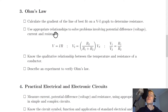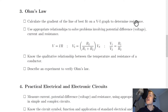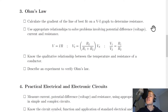Moving on to section three, Ohm's Law. You need to calculate the gradient of the line of best fit on a V-I (voltage-current) graph to determine resistance. For an ohmic conductor this should be a straight line through the origin, and the gradient gives you the resistance. You calculate the gradient by doing the change in Y over the change in X, or (Y2 − Y1) divided by (X2 − X1).